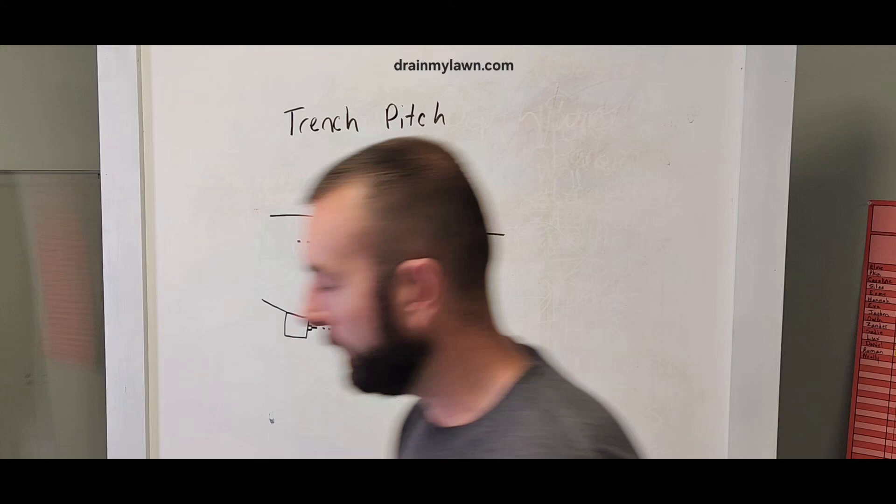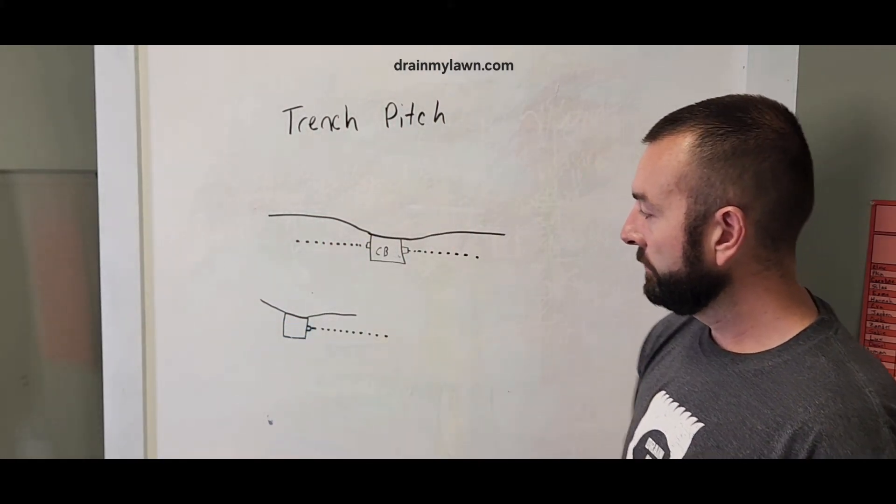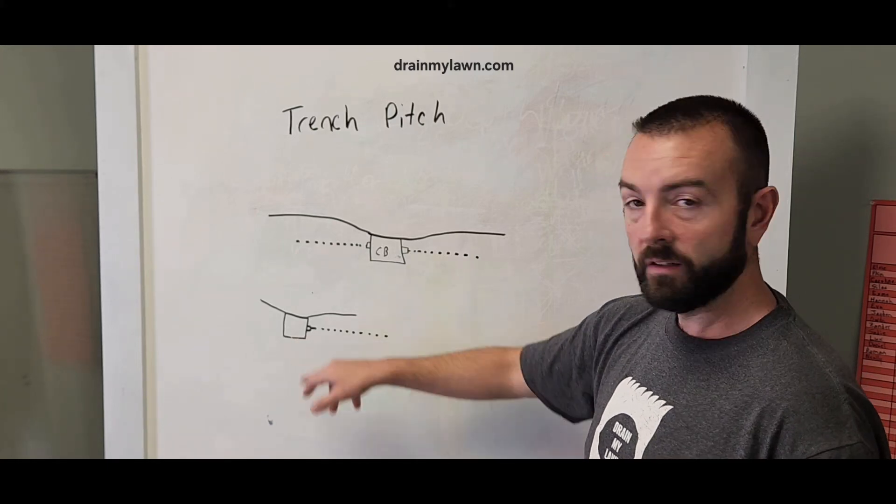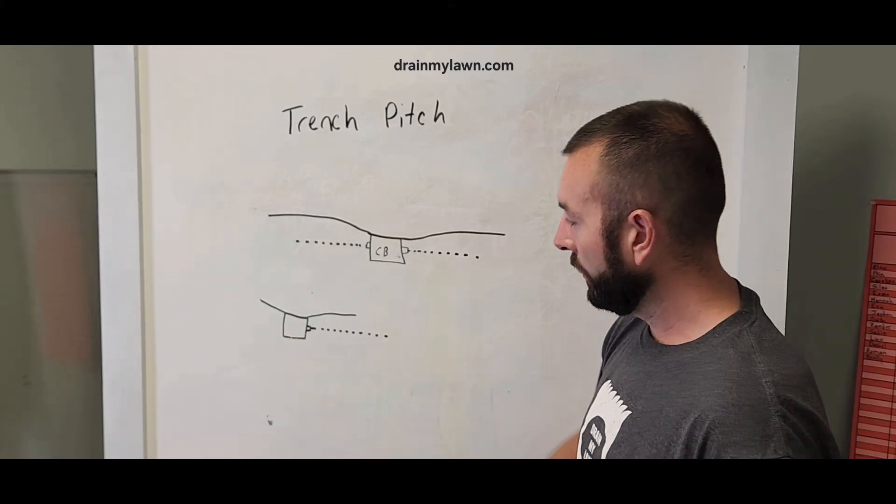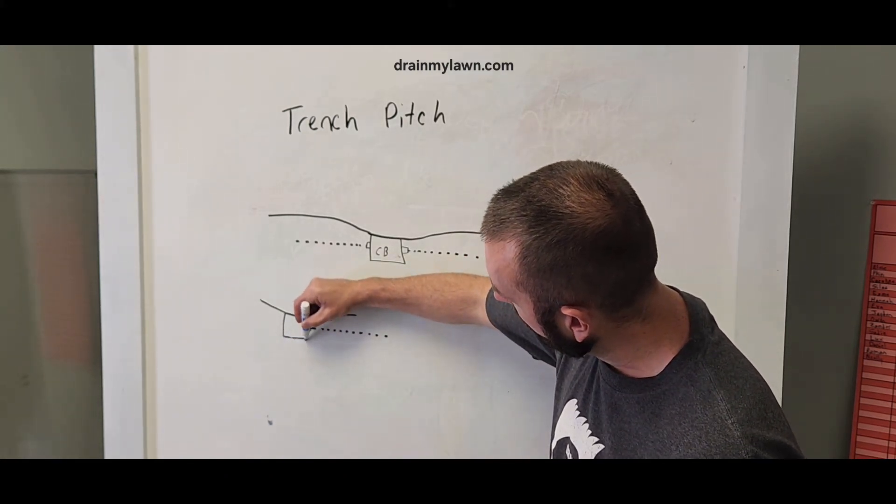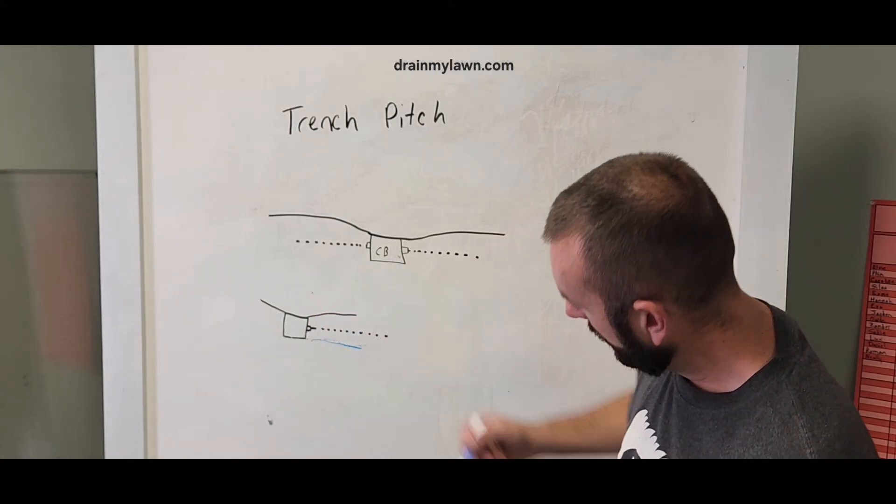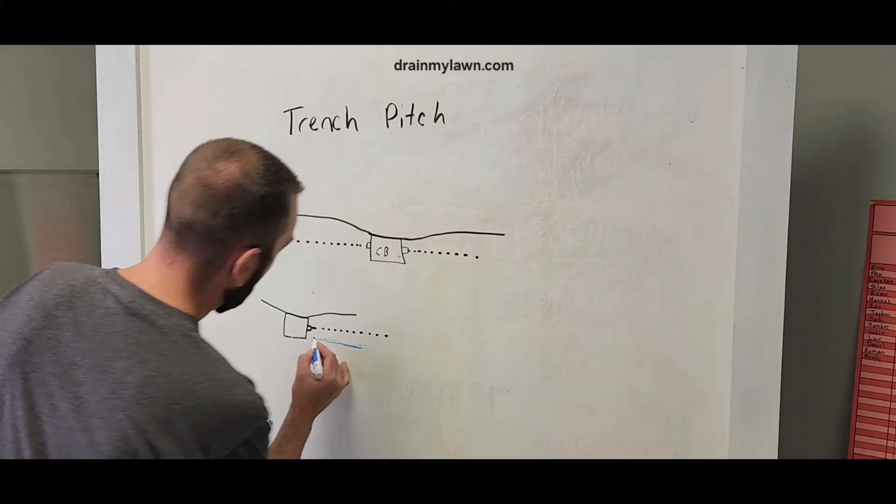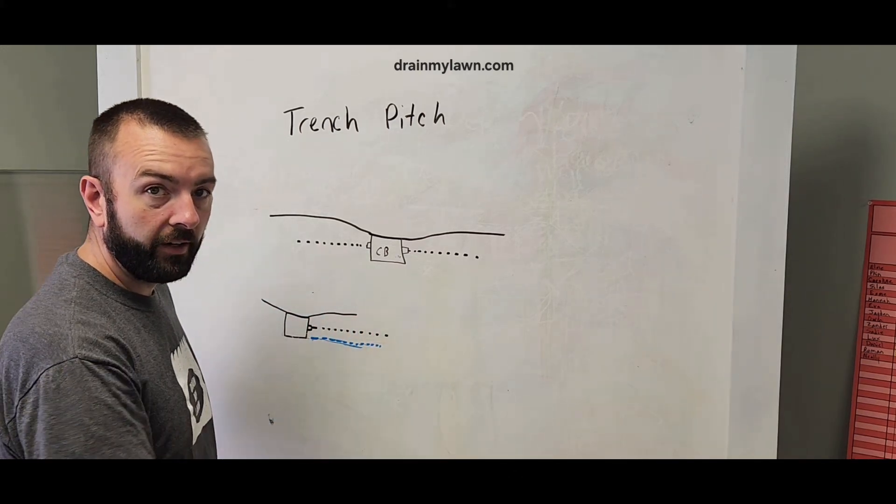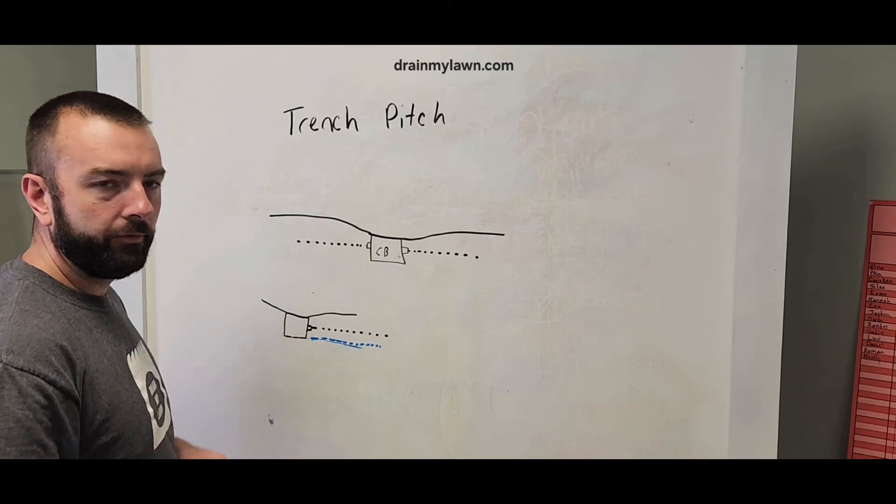The common mistake is if you start with the catch basin, you dig this down. This might be 18 inches deep. And then what will happen? You dug down this far, and then you're not thinking about it. You're like, oh, I've just got to keep on going. I've got to keep my depth going 18 inches deep. And then you wind up over excavating everywhere. You don't realize it until later or after you've already gotten a few things installed.